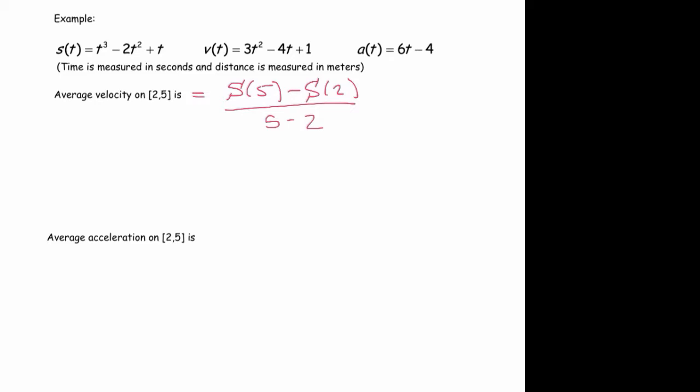And again, your units can tell you that this is indeed a velocity, because the top subtraction, the units are meters, and the bottom subtraction gives you seconds. Right? And so s of five turns out to be 80. If you plug five into that cubic function there, you get 80, minus s of two, which is two, divided by three. So that's 78 divided by three, which turns out to be 26 meters per second. So there's one way to calculate the average velocity.